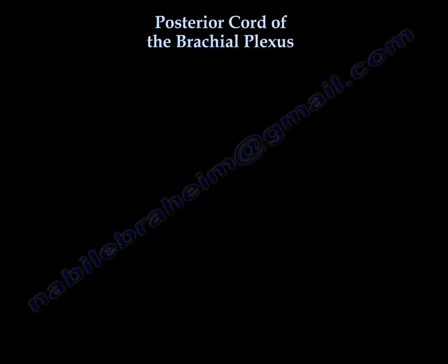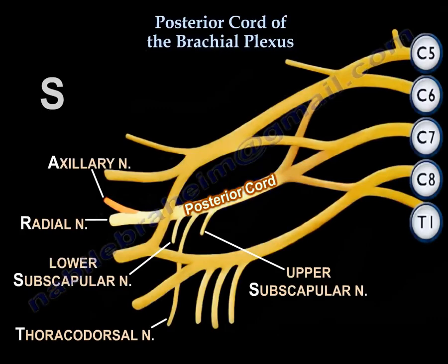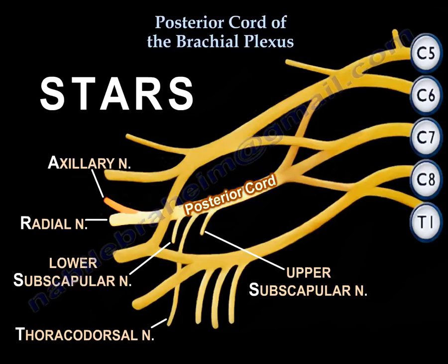Some people use the word STARS as a mnemonic for the branches of the posterior cord. STARS: the first S is for the upper subscapular nerve, the T is for thoracodorsal — the nerve to the latissimus dorsi, the A is for the axillary nerve — supplying the deltoid and teres minor, the R is for the radial nerve, and the final S is for the lower subscapular nerve — supplying the subscapular muscle and teres major. The posterior cord is STARS.